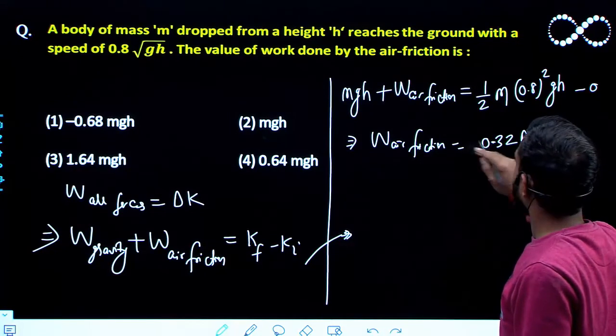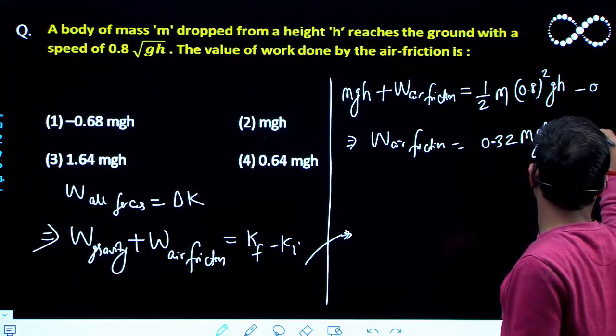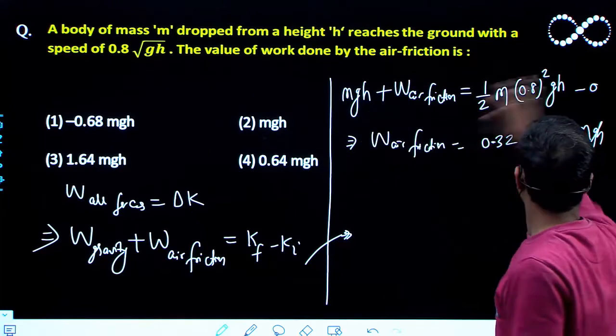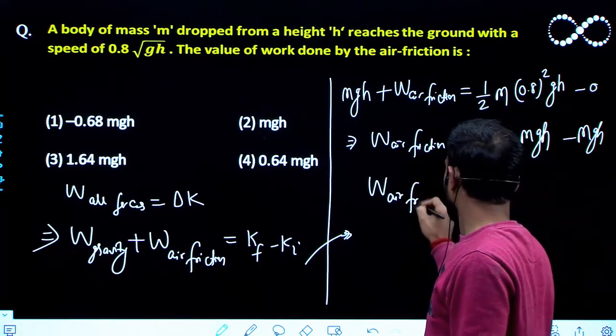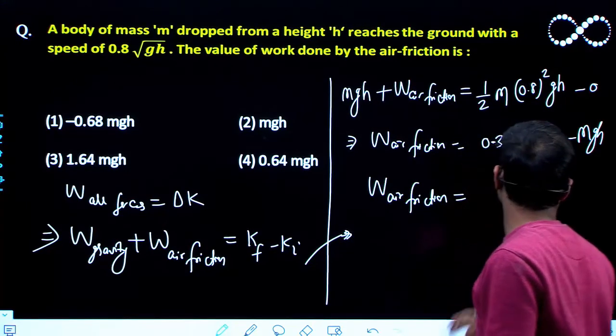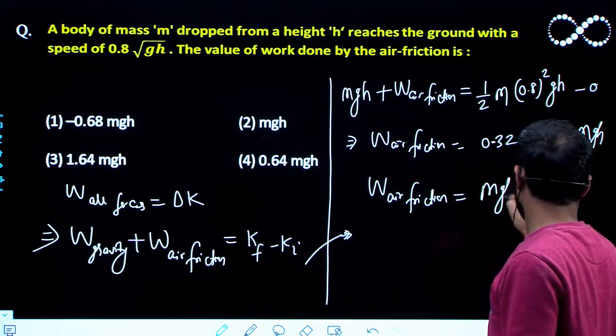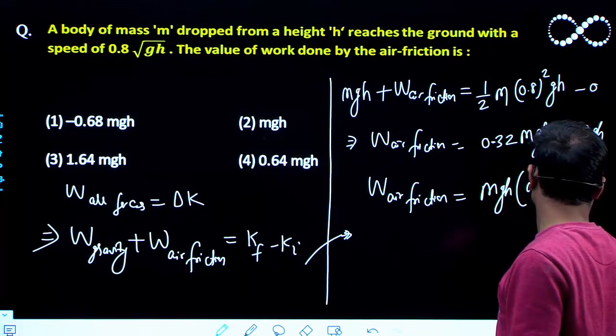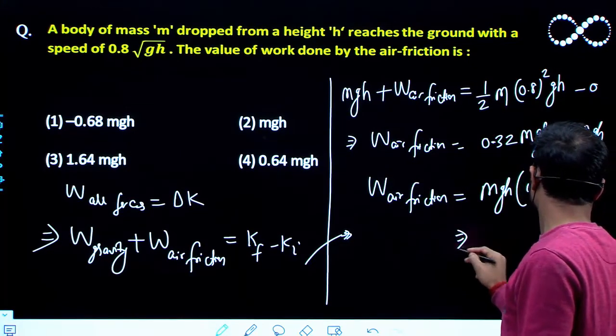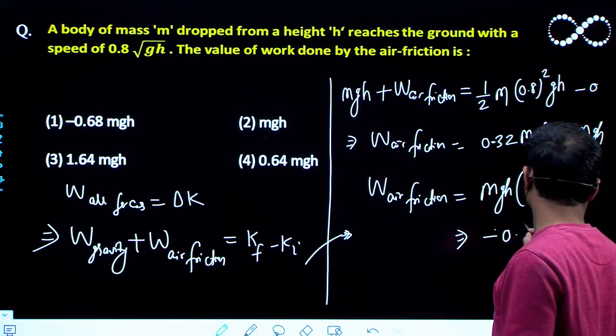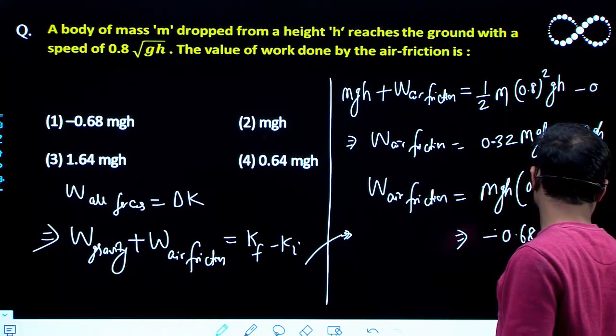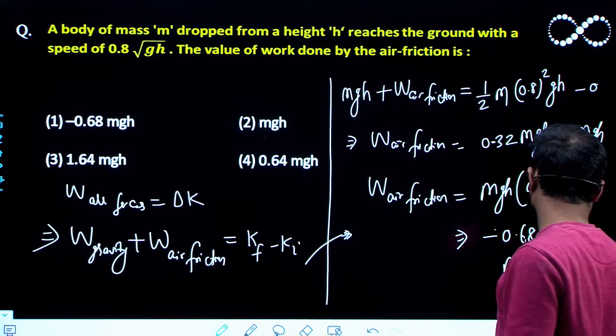And this will become minus mgh because this mgh will come to the right-hand side, so minus mgh. So I can say work done by air friction equals mgh can be taken as common, and 0.32 minus 1, so that will be equal to minus 0.68 mgh, and that will be the answer.